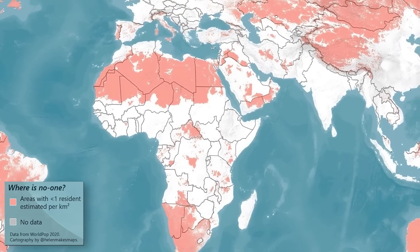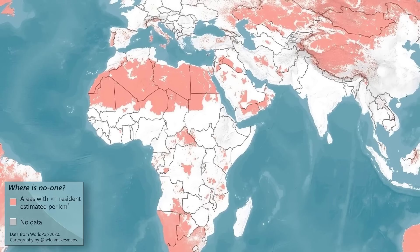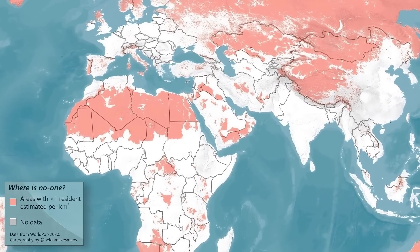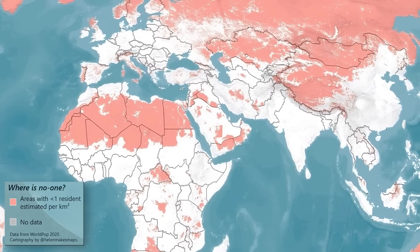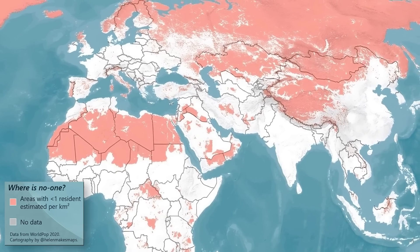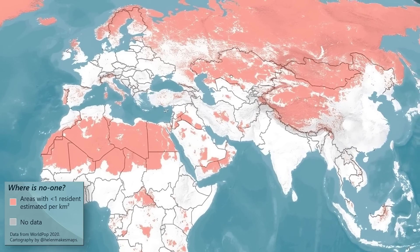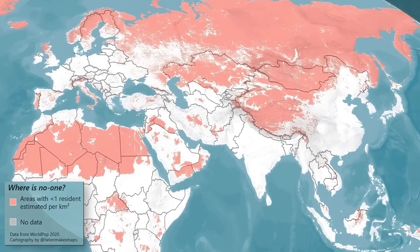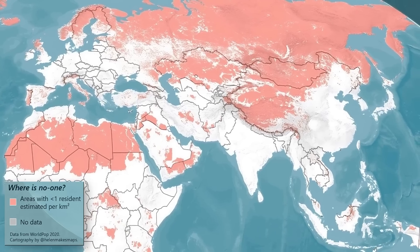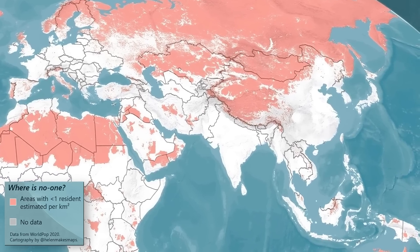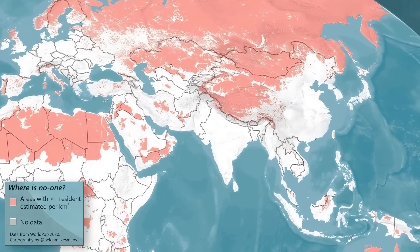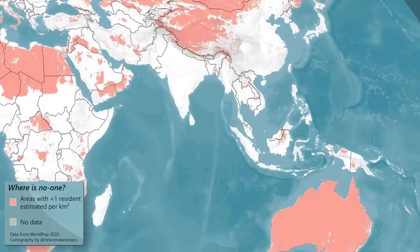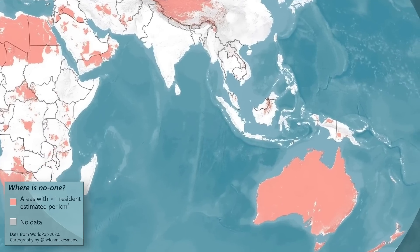In Europe, Iceland is mostly empty, as is northern Scandinavia, and hilly regions of Italy. Portugal sets itself apart as being one of the most empty countries — I did a video on why that is a few weeks ago. In Asia, there are few areas like this: only Siberia, the vast Asian steppes and their deserts, and then specific smaller areas. While in Australia and New Zealand, most of the two countries are empty.